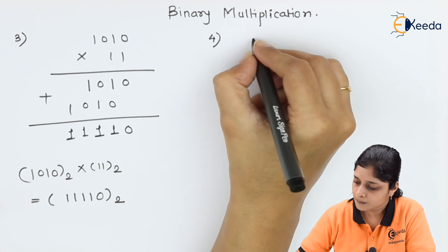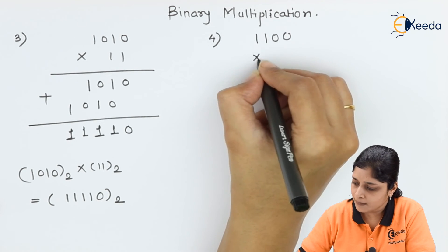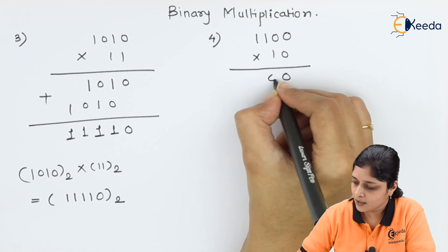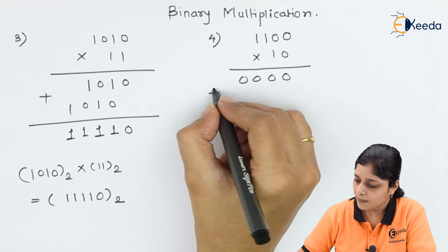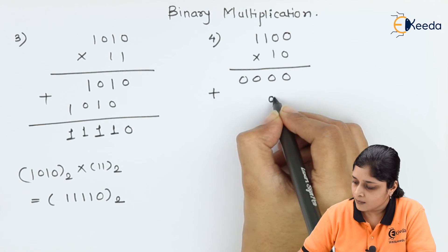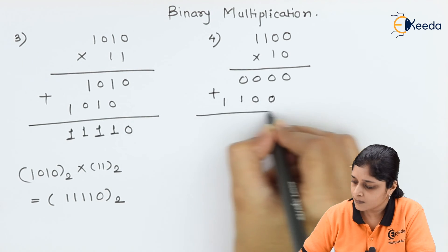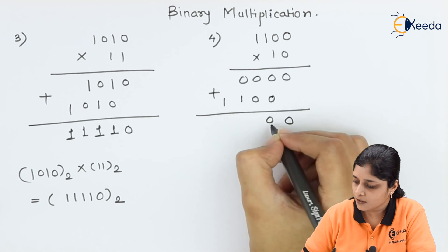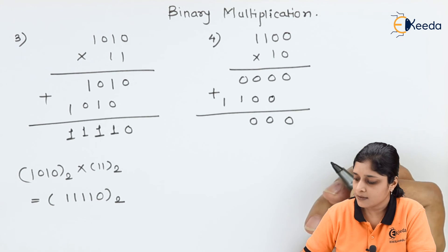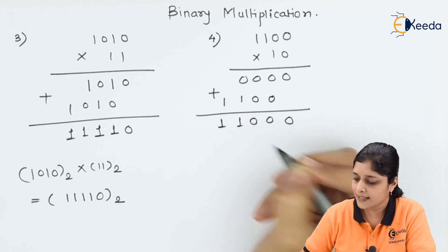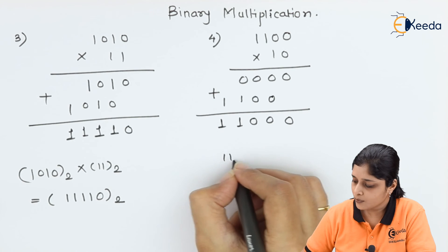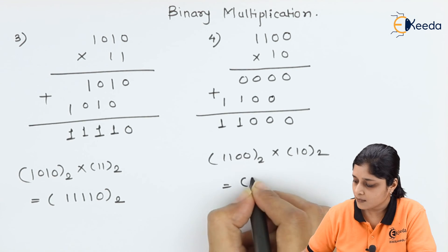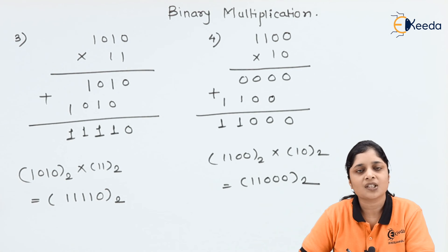For the fourth example: 11100 multiplied by 10. The first term is 0, so write down all 0s. Then, starting from the next position, multiply by 1 — same term: 1 1 1 0 0. Perform binary addition: 0, 0 plus 0 is 0, 0 plus 1 is 1, 0 plus 1 is 1, and 1 as it is. This is how you calculate answers considering binary multiplication in the number system.